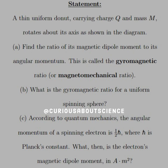A thin, uniform donut carrying charge Q and mass M rotates about its axis as shown in the diagram. Part A: Find the ratio of its magnetic dipole moment to its angular momentum. This is called the gyromagnetic ratio or the magnetomechanical ratio.